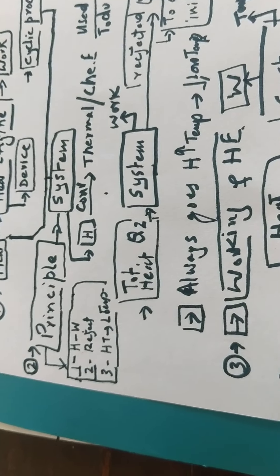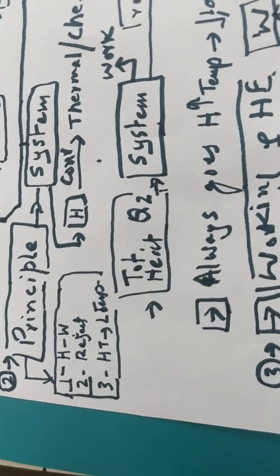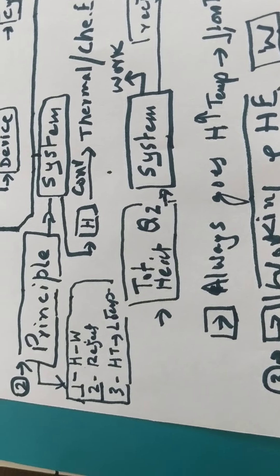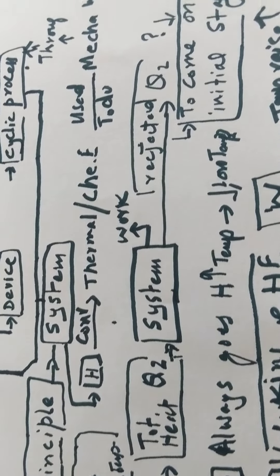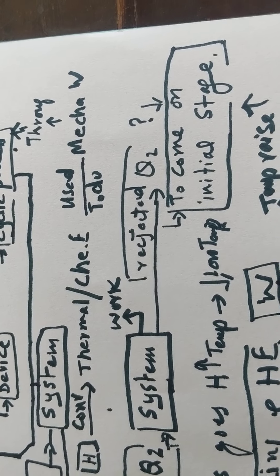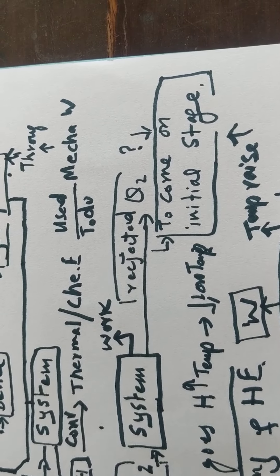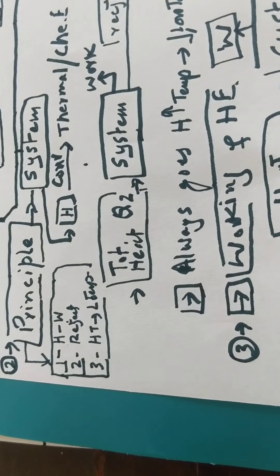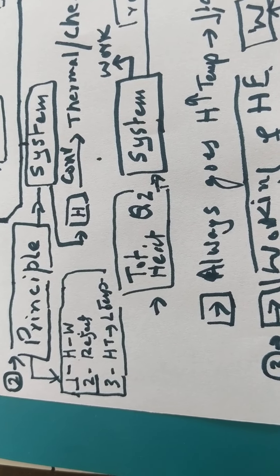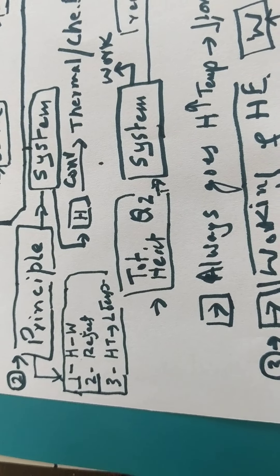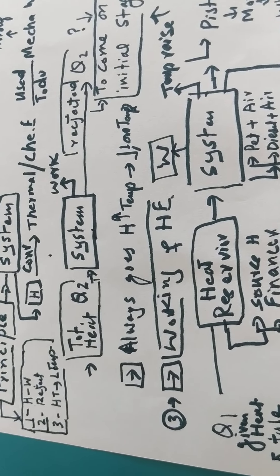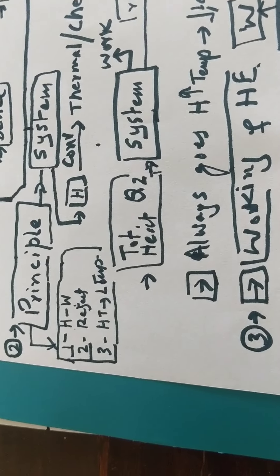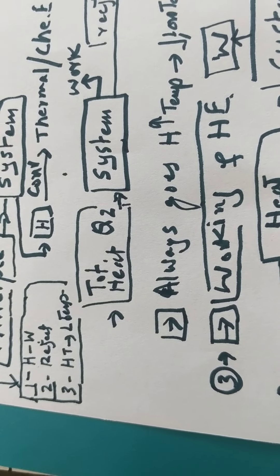There are three points in this principle. First, heat is converted to thermal or chemical energy used to do mechanical work through cyclic process. Second, there is rejection of energy - some energy must be rejected through the system. And third, energy always moves in the system from higher to lower temperature.